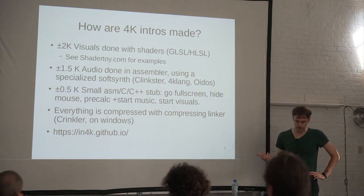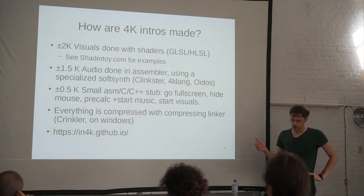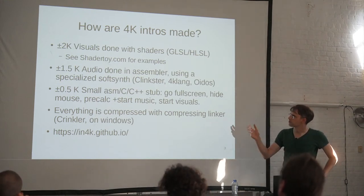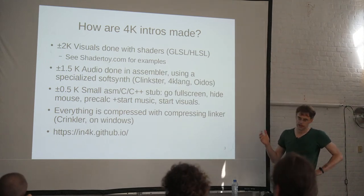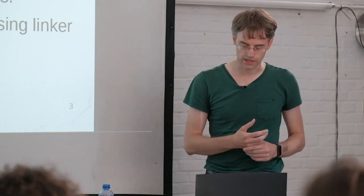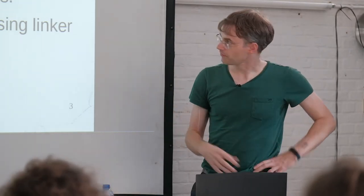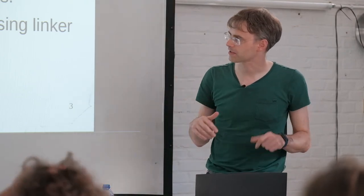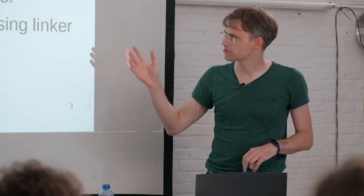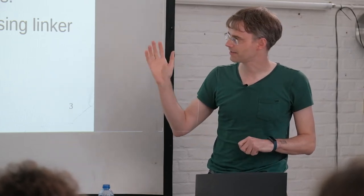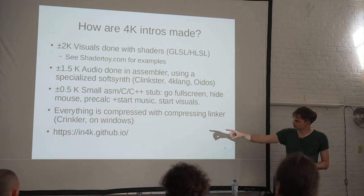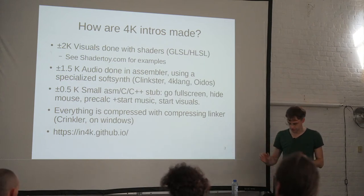The audio in a 4k intro is done in assembler using a specialized software synthesizer - there's Clinkster, Clang, Oidos - typically taking one to one-and-a-half kilobytes. A small stub of about half a kilobyte opens a fullscreen window, hides the mouse, starts the music precalc, then launches the music and visuals. All this is compressed with a compressing linker called Crinkler. On Linux there are similar tools. For a general guide on making 4k intros, n4k.github.io is the resource.